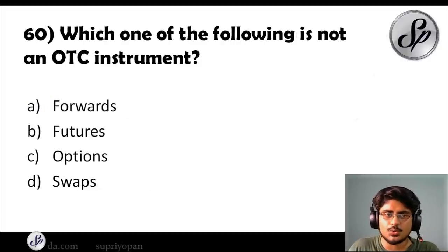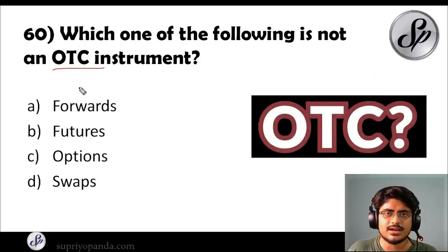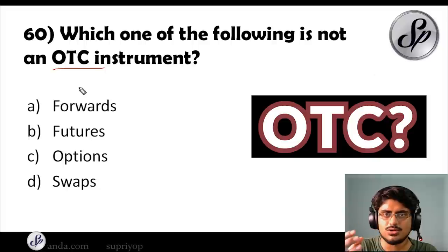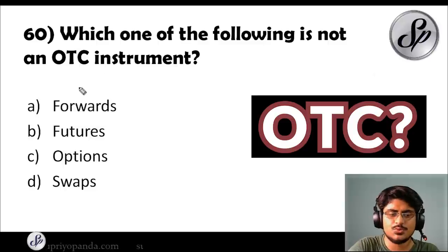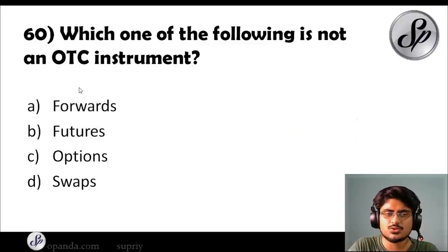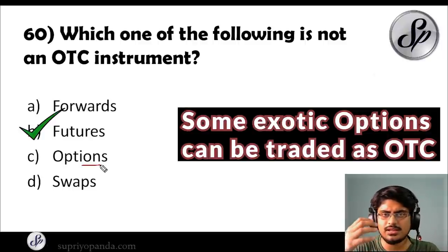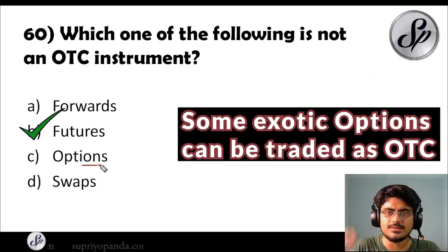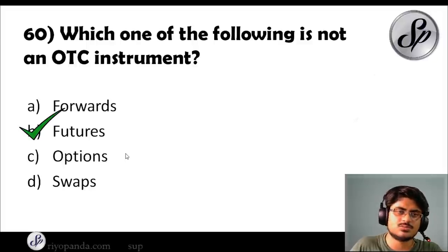Question sixty: which one of the following is not an OTC instrument? OTC stands for over-the-counter — derivatives traded without a regulated agency, directly between parties. The answer is futures. Note that there are some OTC options — exotic options — that can be traded over-the-counter. But futures cannot be traded as OTC instruments.